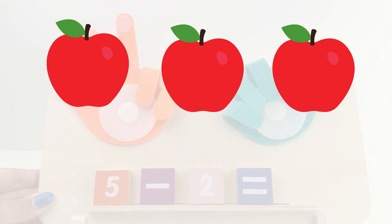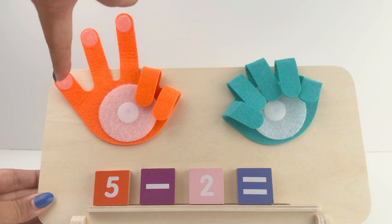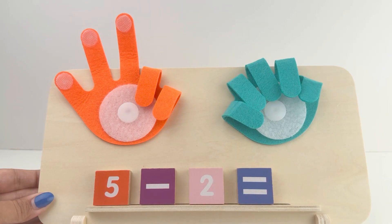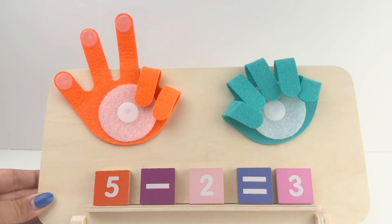Now, let's count how many apples you are left with. 1, 2, and 3. 5 minus 2 equals 3.